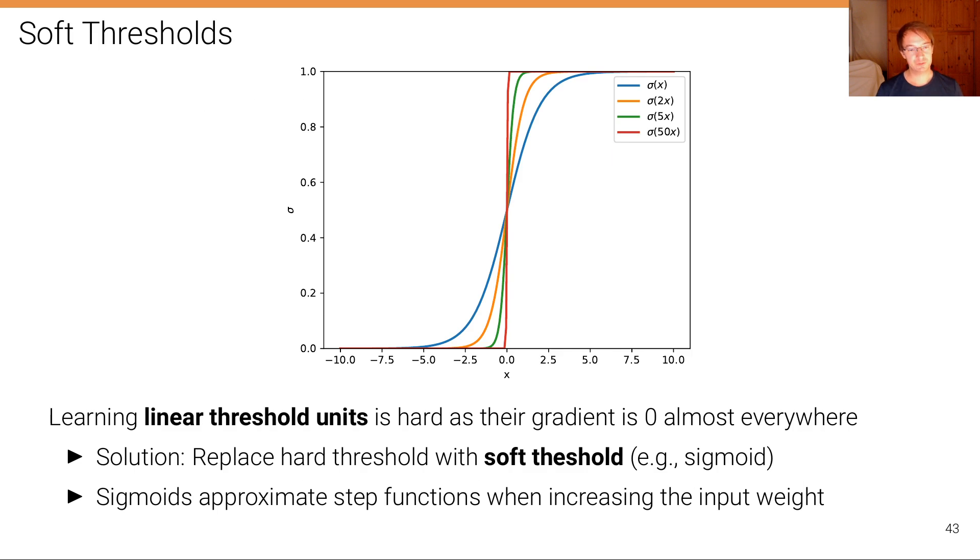Now one thing that we've assumed here is that we have linear threshold units, and of course learning linear threshold units is hard as the gradient is zero almost everywhere and they are not differentiable. So the solution here is to replace the hard threshold units with soft threshold units such as sigmoids. Here you can see the sigmoid function in blue.